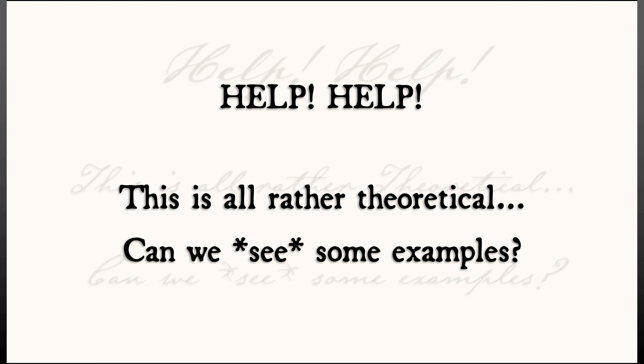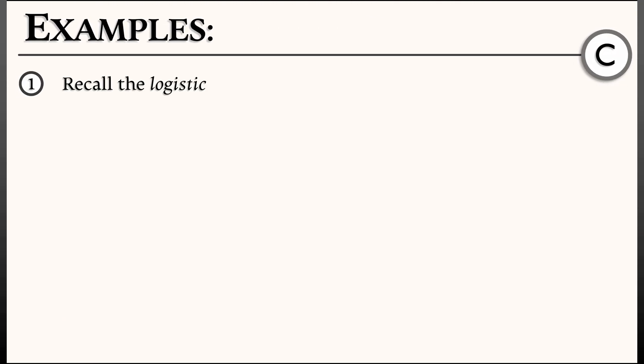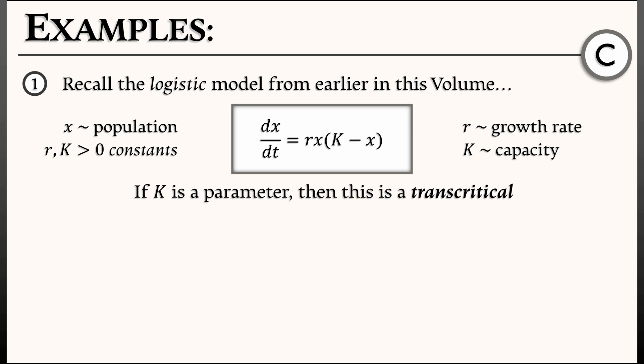But if you think about it, we've already seen a few examples of these earlier in this volume. Recall the logistic population model that we looked at, dx dt equals rx times quantity k minus x, where x is a population size, r and k are constants. If we think about r as a constant, but we think of k, that carrying capacity, as a parameter, then this is precisely the normal form for a transcritical bifurcation.